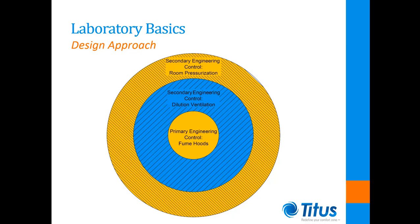Alternatively, a proportional offset control can be implemented where the differential is a percentage of the total exhaust airflow. There are some exceptions to this where the pressure relationship will need to be positive in order to prevent contaminants from outside the room affecting the experimentation. These spaces are typically microelectronic or medical laboratories where the air cleanliness is critical to ensure accurate results of the testing or medicines being developed.